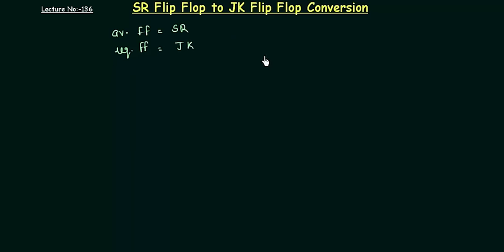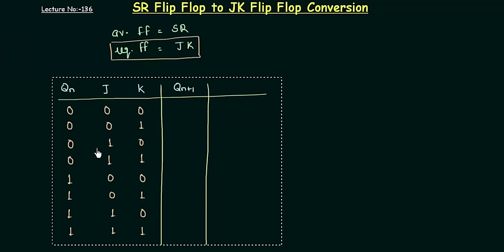Now you already know in step number 2, we have to find out the characteristic table for your required flip-flop, and the required flip-flop is JK. So we will make a characteristic table for JK flip-flop. I have already made the table, so let me paste it down. In this we have to find out the value of QN plus 1 to complete the characteristic table.